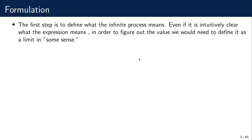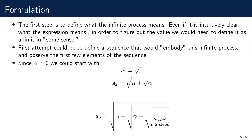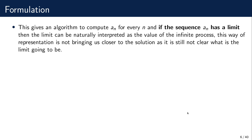The first step would be to define some sequence that imitates this infinite process, and then the limit of the sequence would be the value of this expression. It seems reasonable that a₁ would be the square root of alpha, and then a₂ would be alpha plus that. And then aₙ would involve, just for illustration, two square roots, and here we perform this process n minus two steps. This would be a reasonable candidate for a sequence, but this is not a rigorous way to define the sequence. We can make it more rigorous by defining it in a recursive way, which is actually implicit.